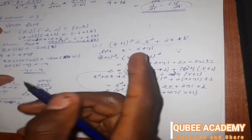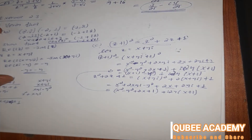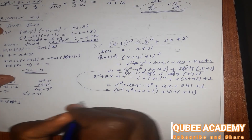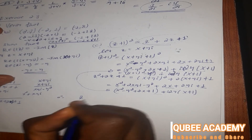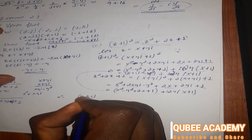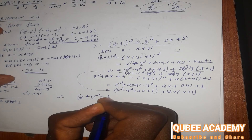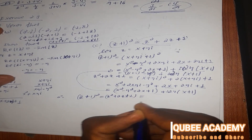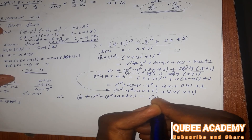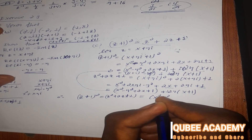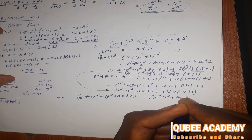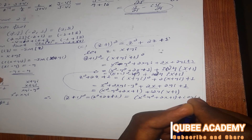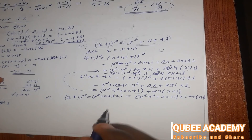Therefore, z plus one, the whole squared, is equal to z squared plus two z plus one, which equals x squared minus y squared plus two x plus one, plus i times two y times x plus one. That's the result.